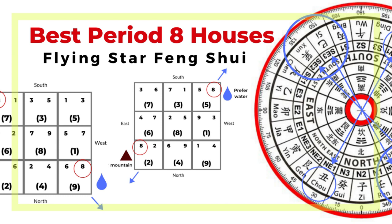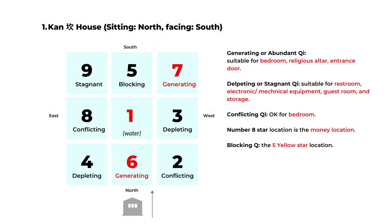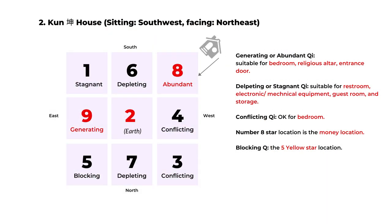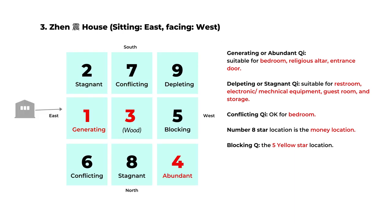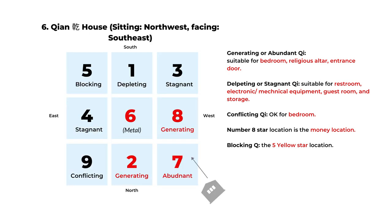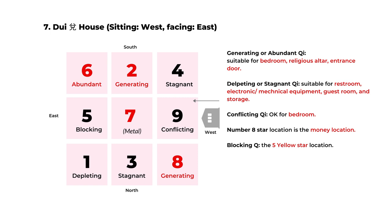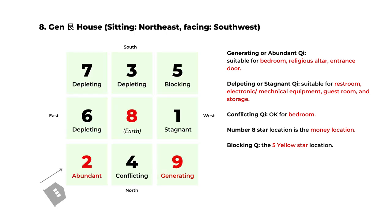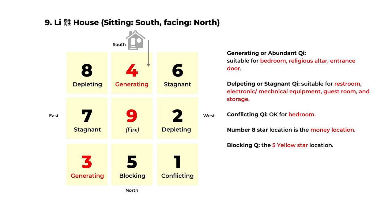Another factor is the construction date of the house. Depending on if it's built in period 6, period 7, or period 8, they have different charts, so that can get very complicated and confusing. Sometimes we just don't have the history of the building. So today I'm going to show you a very simple system — also called the flying star house chart — but it's only based on the direction of the house regardless of the construction date or any major renovations. There are only eight charts, so it's easier and more practical to use.